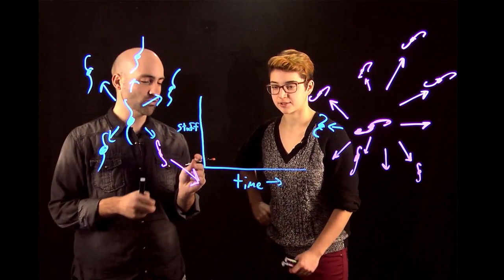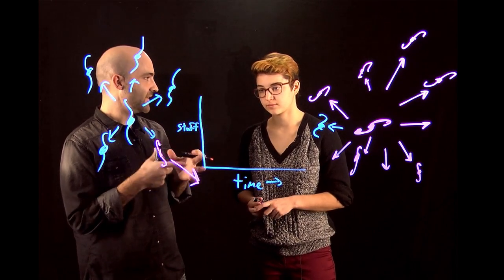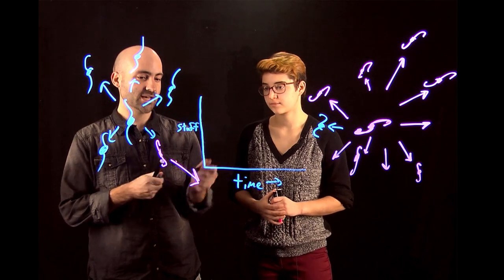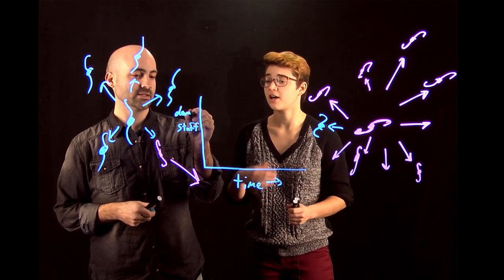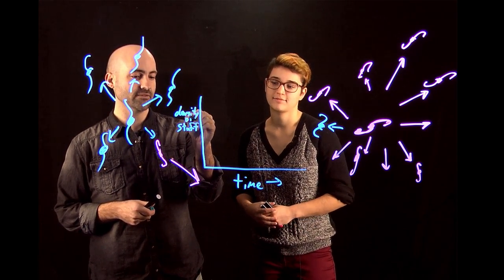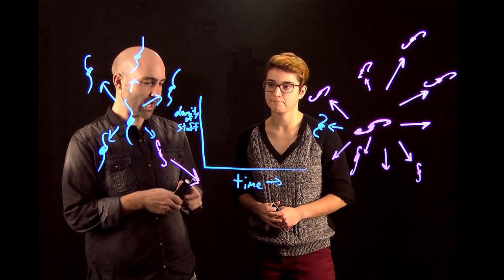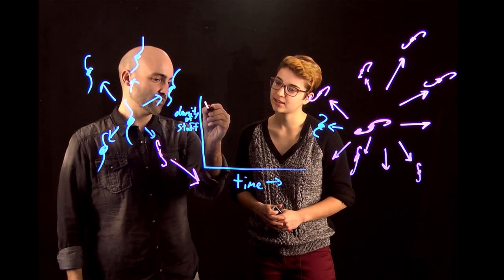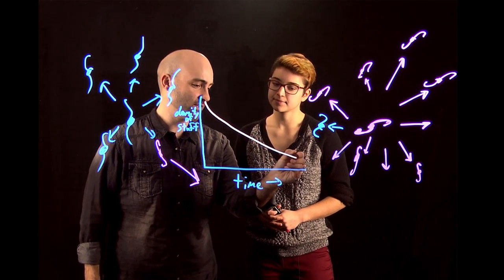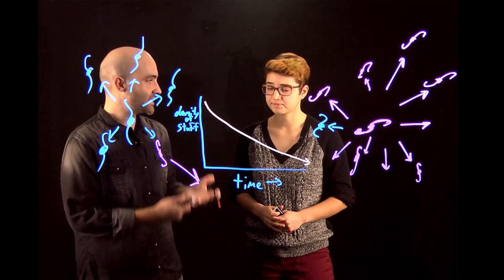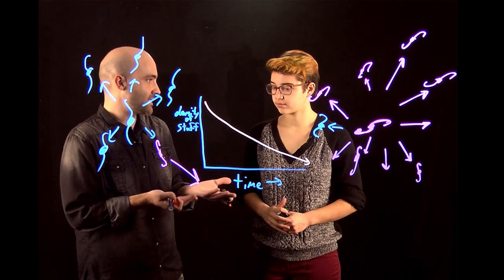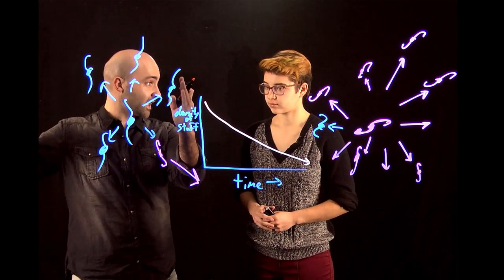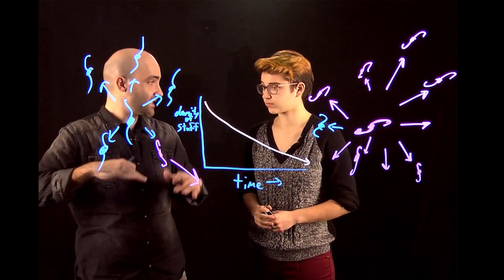The universe has only so much stuff in it. So over time, this shouldn't be stuff, this should be density. Density of the stuff. It's pretty accurate units. This is very important. So over time, the density of stuff in the universe goes down, right? Because there's only so much of me and you and chairs and galaxies and whatever. And the universe is getting bigger and bigger every day, so the density goes down.